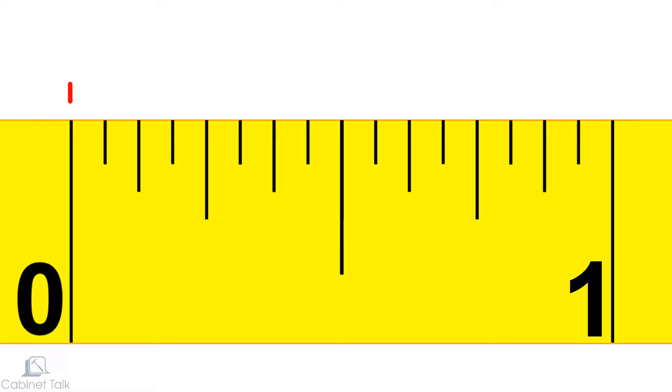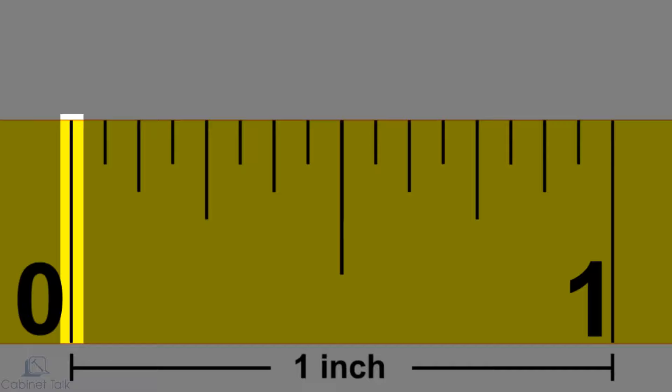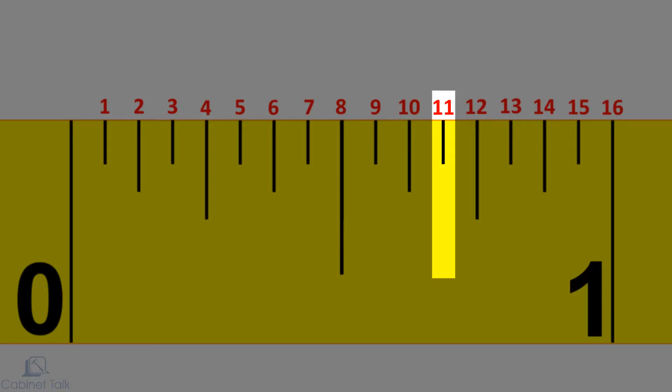The distance between the zero line and the one line is one inch. Beginning from the zero mark, we need to count 16 lines to reach the one inch mark.